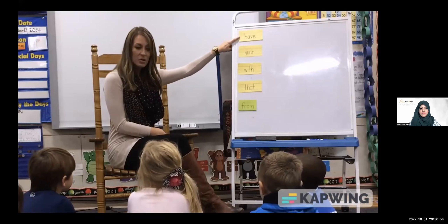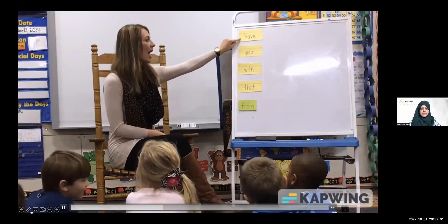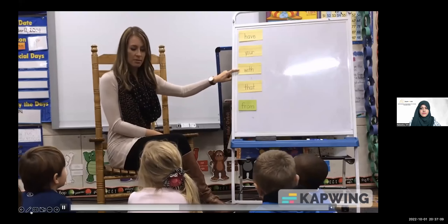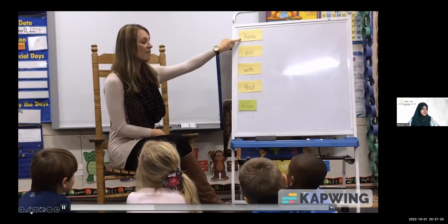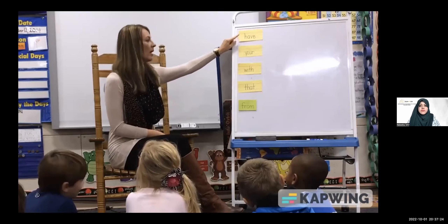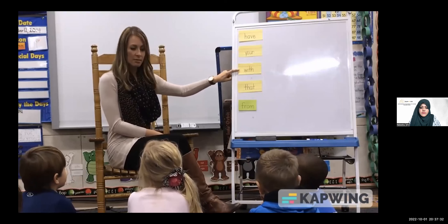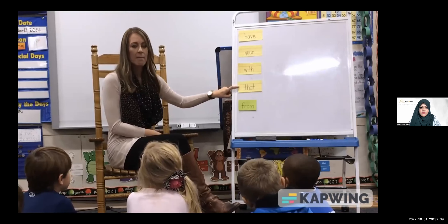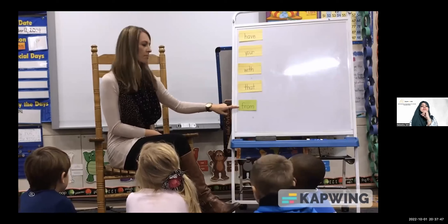I'm going to go back to 'have' and use it in a complete sentence. 'Have' — I have a cookie for you. 'Your' — This is your letter from Santa. 'With' — I am going with you to school. 'That' — That is a big cookie. 'From' — This is your letter from mom. Now that we've used them all in a complete sentence, I want you to repeat the words after me. Have. Have. Your. Your. With. With. That. That. From. From. Very good.